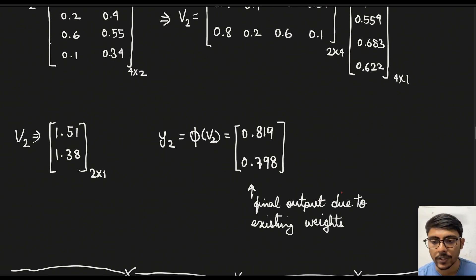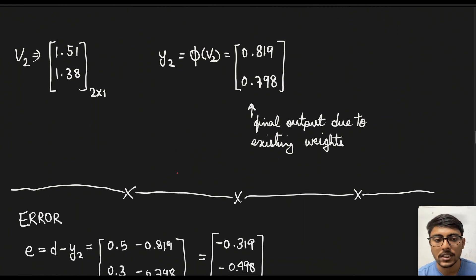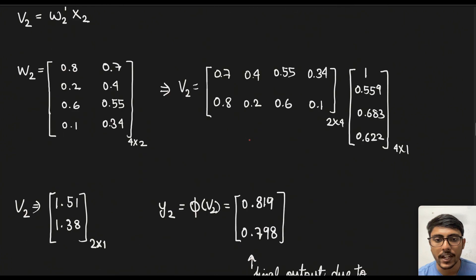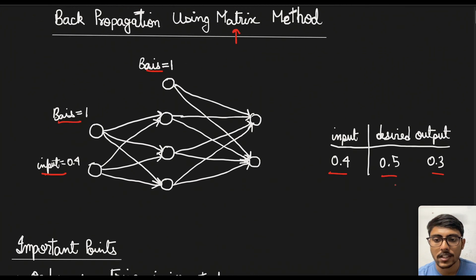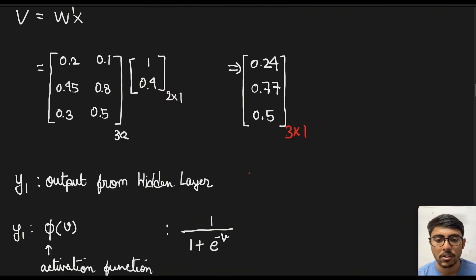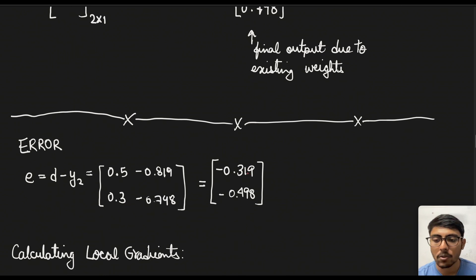Final output is due to the existing weights which are actually right now present. Now we see that this is different from what we expect as the desired output. Here is the desired output of 0.5 and 0.3. So this is not what we got because of the weights. So what we need to do now is find out the error. So the error is basically given by d minus y2. d is the desired output. So 0.5 minus 0.819 and 0.3 minus 0.798 we get these.